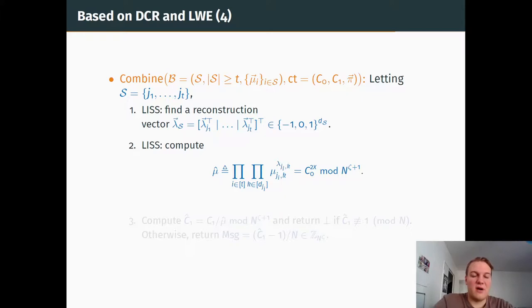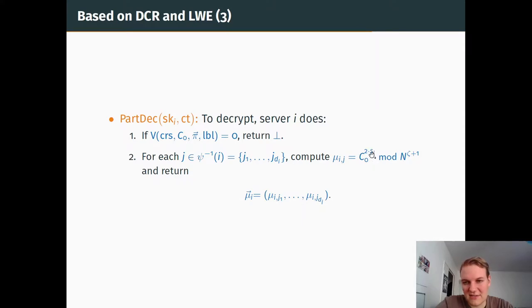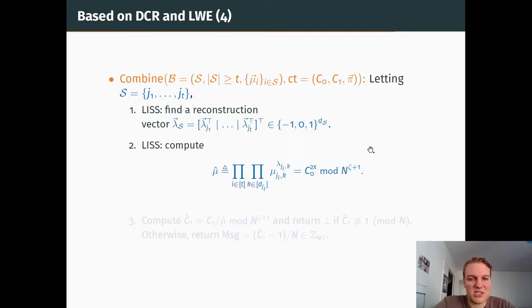Finally, when we have enough of these partial decryptions, we can find a reconstruction vector, and we can compute this big product. This product is actually turned into a sum when you put it in the exponent, and when you do so, it's actually c_0 times the sum of the reconstruction vector times some coordinates s_j of the key shares. In the end, you should get c_0 to the 2x. From this, you compute c_1 hat, which is c_1 over mu hat mod n^{zeta+1}, and you actually remove the h to the r part. Normally, if everything is done correctly, this is now just 1 plus n to the message. You check that it is the case by looking at this, and if everything is all right, you can recover the message.